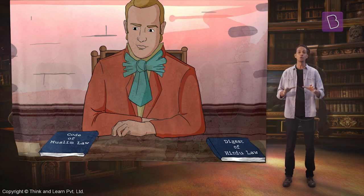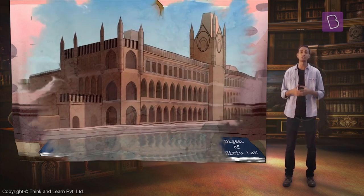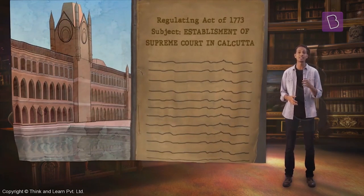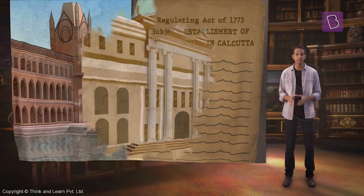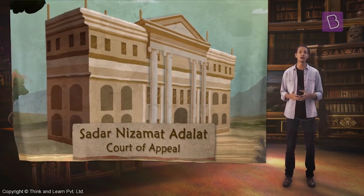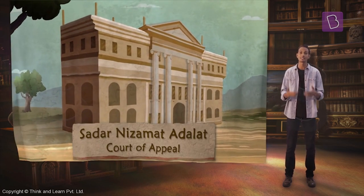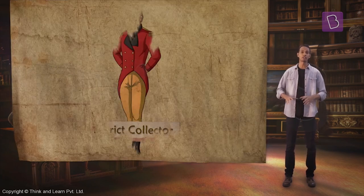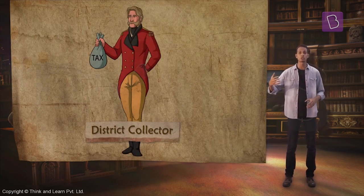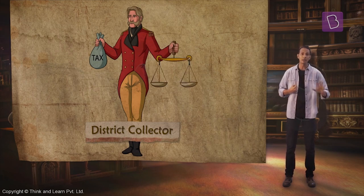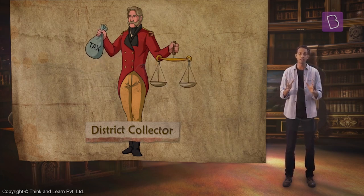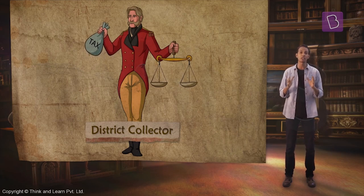A code of Muslim laws was also compiled for the use of European judges. A new Supreme Court was established in Calcutta via the Regulating Act of 1773. A court of appeals called the Sadra Nizamat Adalat was also established. The new district collector, whose job it was to collect taxes and maintain the law, became the most important figure in British administration.